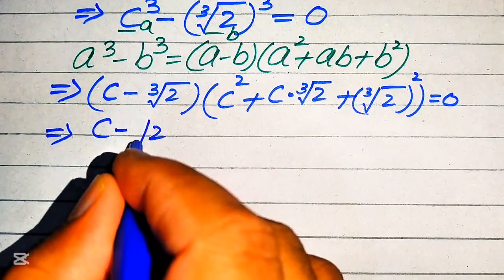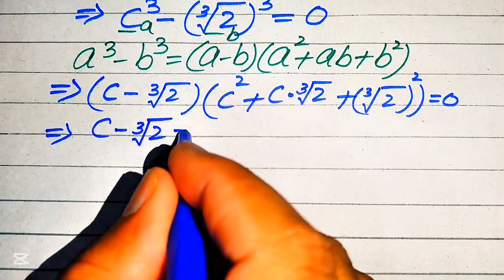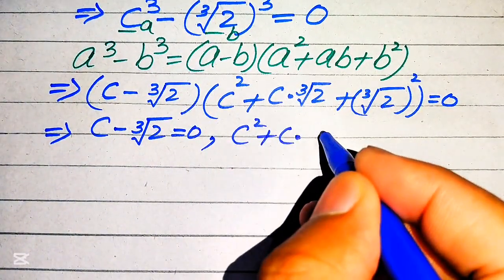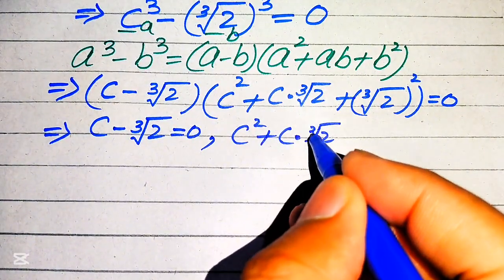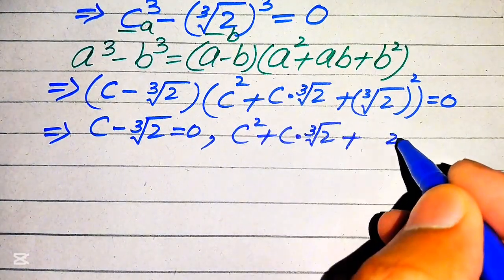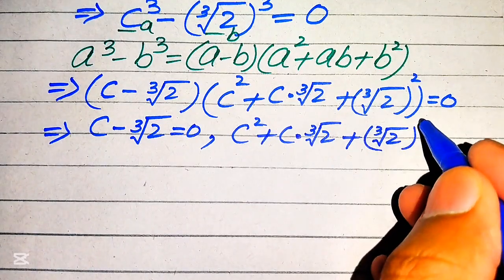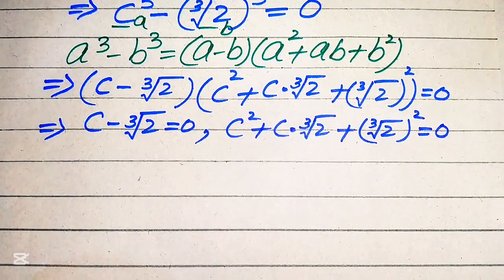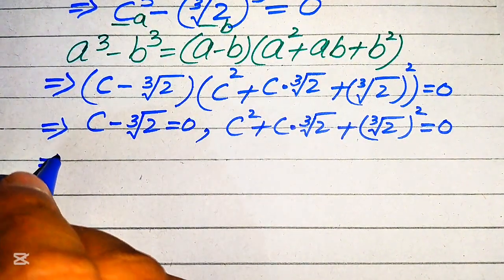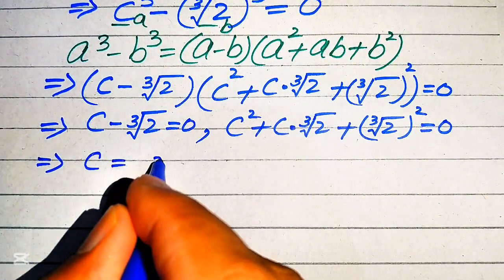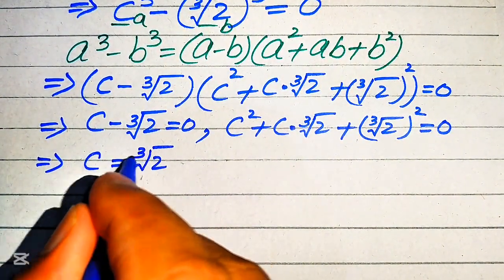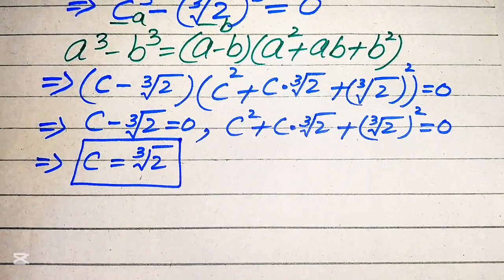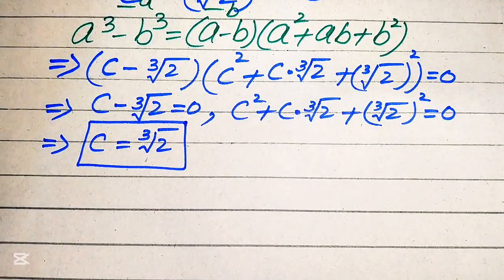The first case is c minus cube root of 2 equals zero. The second case is c squared plus c times cube root of 2 plus (cube root of 2) squared equals zero. From the first case we easily get c equals cube root of 2, which is our first solution of the given equation.